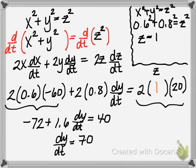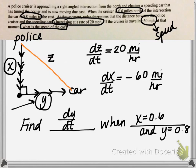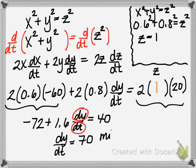Now we attach units. Looking at the relationship between y and t on the diagram: y is a distance measured in miles, and time is measured in hours — so this is 70 miles per hour. Notice we got a positive rate, which makes sense because the car was moving away from the intersection, so that distance was increasing. To finish: at the moment the policeman is 0.6 miles north of the intersection and the car is 0.8 miles to the east, the speed of the car is 70 miles per hour.